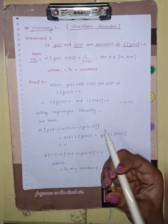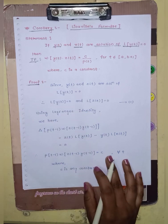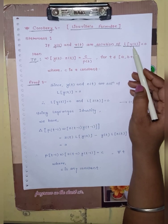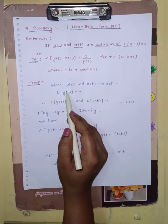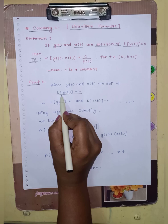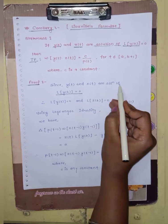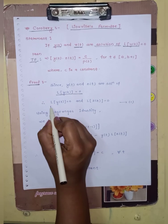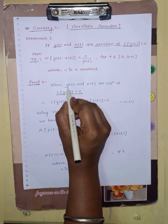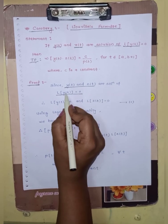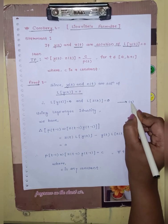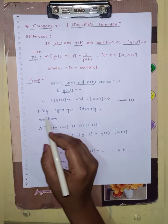Since y(t) and z(t) are solutions of the linear operator L[y(t)] = 0, we can write L[y(t)] = 0 and L[z(t)] = 0, because substituting these solutions into the operator gives 0. We label this as equation 1.